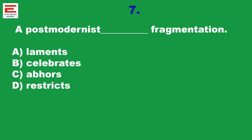Seventh question: A postmodernist — what does he do regarding fragmentation? Does he lament or celebrate, abhor or restrict? Of course, postmodernism gives more importance to individuality — it accepts and celebrates. So option B is the answer. This is the most simple question because it directly comes from the definition of postmodernism. Become familiar with the postmodern movement.